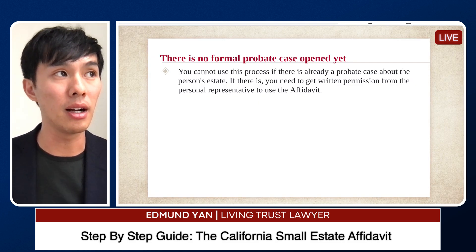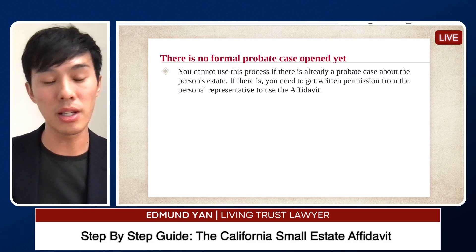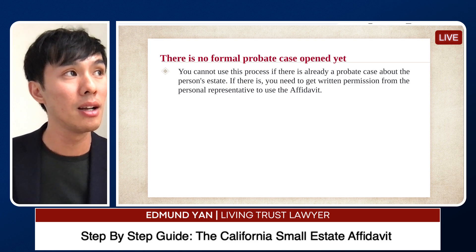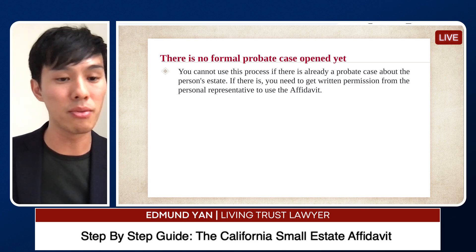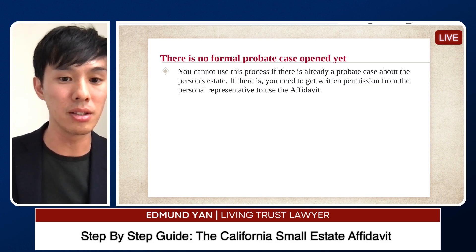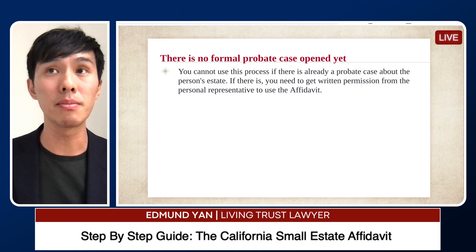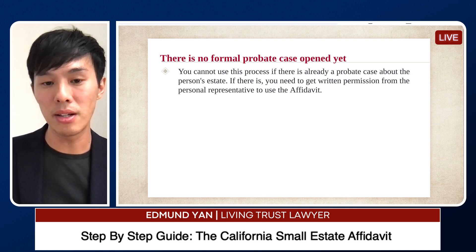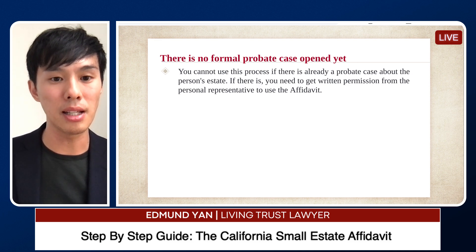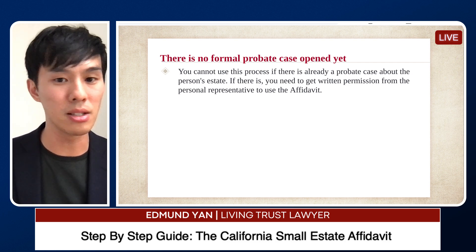If you do have real property right now in California, you should definitely set up a trust so your kids don't end up in probate. For example, for a million-dollar home in California, probate costs about $46,000 — half goes to the attorney and half to the personal representative. It's very expensive, so we want to make sure we avoid probate for our family.